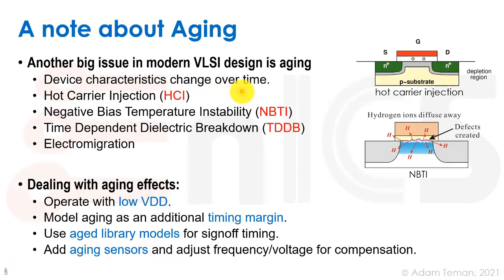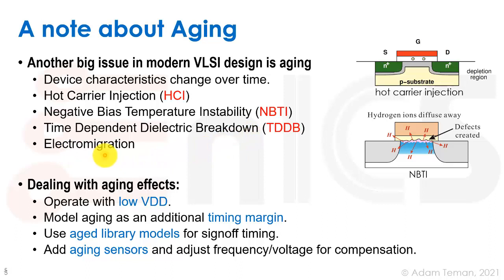There are different phenomena that affect transistors and metals over time, changing device characteristics. Hot carrier injection changes the V_T of transistors over time based on how long they're on — discussed in the VLSI course. Negative bias temperature instability (NBTI) is similarly important in modern processes. Time-dependent dielectric breakdown means the dielectric changes and eventually breaks down. Electromigration is probably the most critical long-term reliability phenomenon on metal layers.